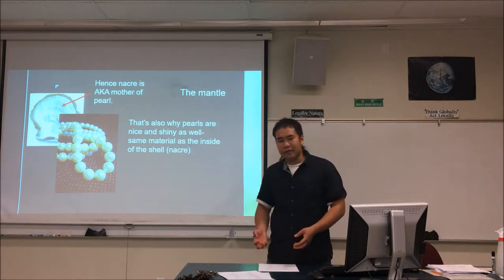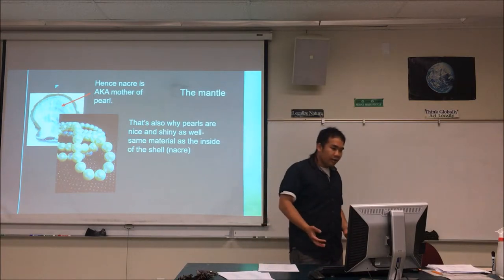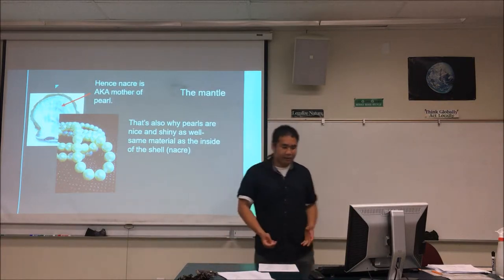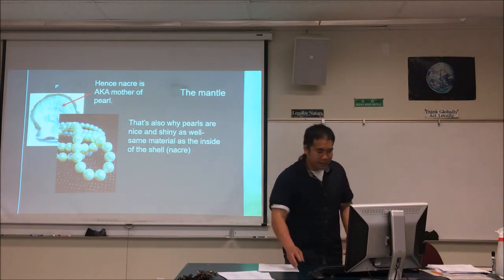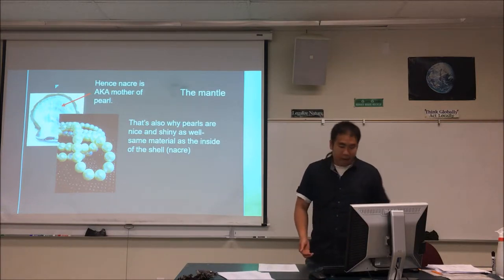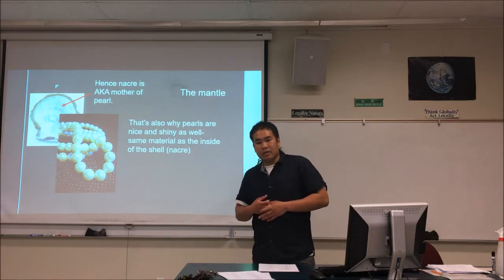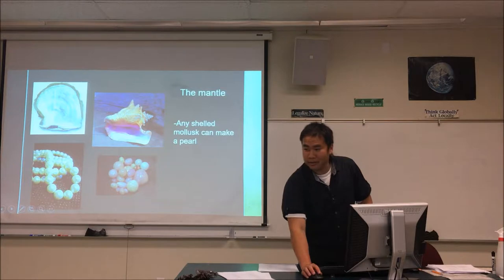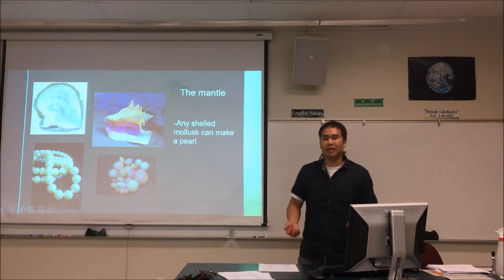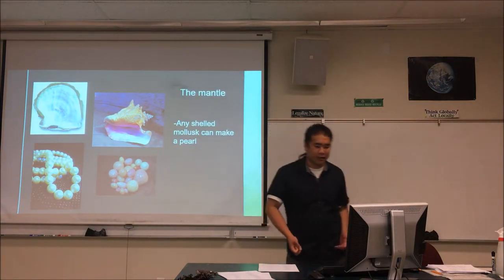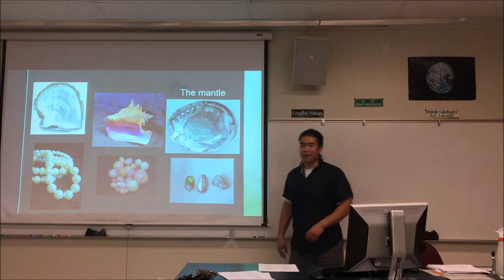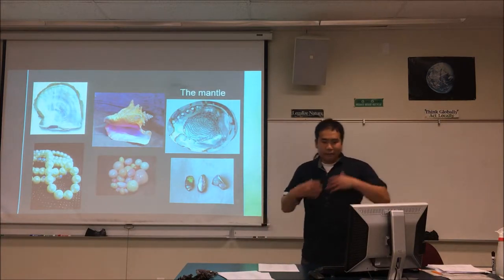Anything that can make a shell can make a pearl. So not just oysters — snails can make pearls too. For example, the queen conch makes pearls the same color and material as its shell, because it's the same thing — nacre. And abalone pearls exist too. They may not be spherical, but they're still pearls. A pearl is any foreign piece covered in nacre.